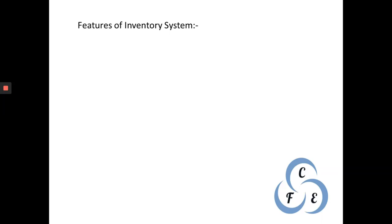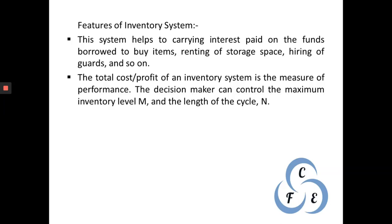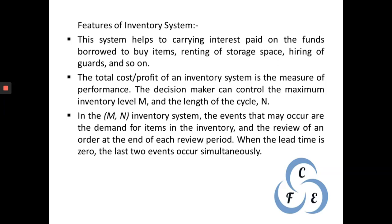Now let us look at the features of an inventory system. First, it helps make a budgetary response for a house or shop — for example, calculating interest paid on borrowed funds, cost of renting storage space, or hiring of guards. Second, the total cost or profit of an inventory system is the measure of performance; by changing the level M, the length of cycle N, we can control expenditures and decide profit accordingly. Third, in an M,N inventory system, the events that may occur are the demand for items and the review of the order at the end of each review period. When lead time is zero, these last two events occur simultaneously.